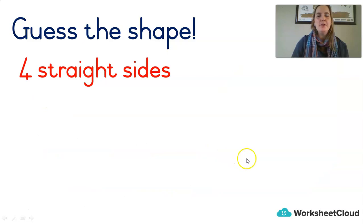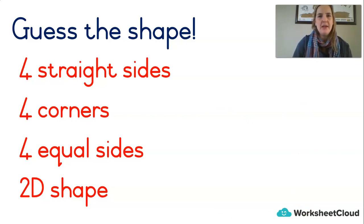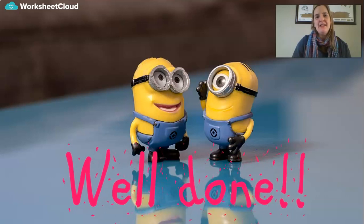Last one. Four straight sides, four corners, four equal sides and it's a 2D shape. Four, four, equal, 2D shape. Are you thinking what I'm thinking? It's a square. Yes, it's a square. Well done everybody. That was so much fun.